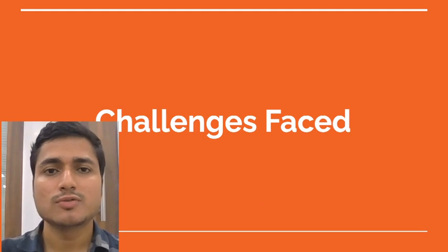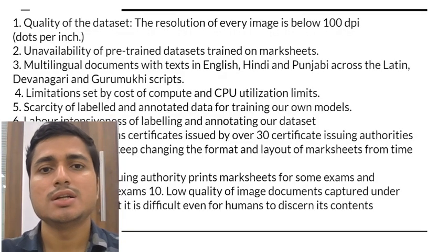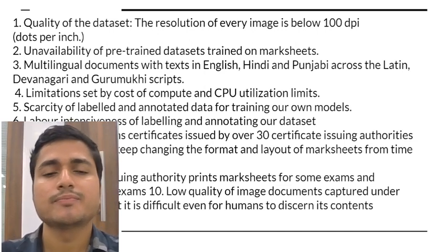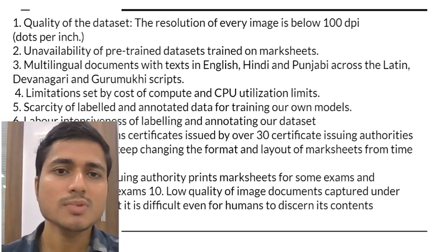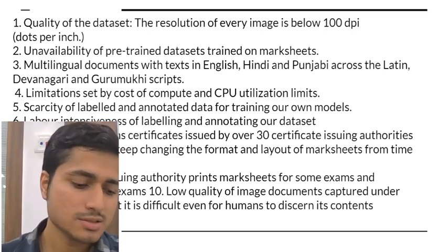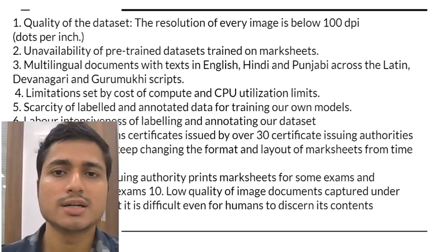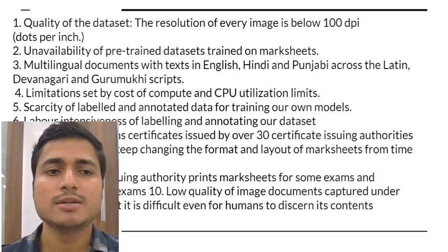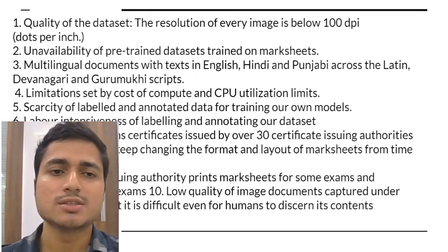Some of the main challenges faced while building this software: each image in the dataset was 98 DPI — dots per inch gives the resolution through the number of pixels per square inch. No pre-trained dataset was available, so it had to be built manually. The extracted text also contained multiple scripts: Gurmukhi, Devanagari, and the Latin script.